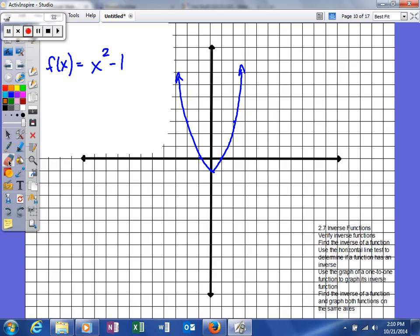But what they can do with functions like this is they can actually restrict the domain. So what they can do is they'll come up here and say for those x's that are greater than or equal to 0.